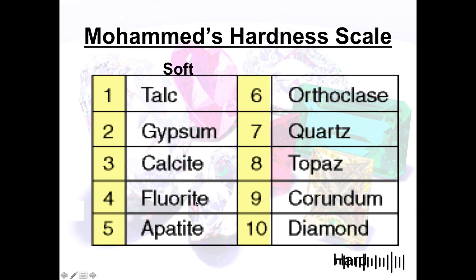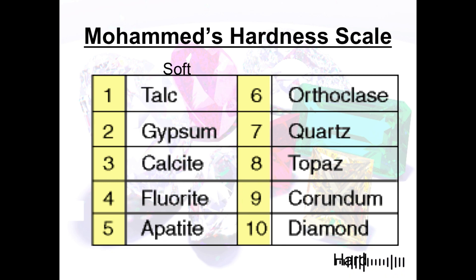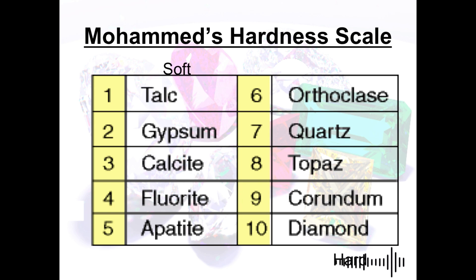Next is fluorite, rated 4 on the Mohs scale. Fluorite is also called fluorspar — it is a halide mineral that contains calcium and fluoride. It is known to absorb and neutralize negative energy and stress.